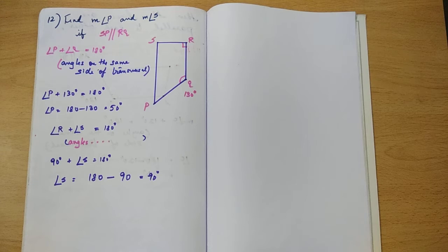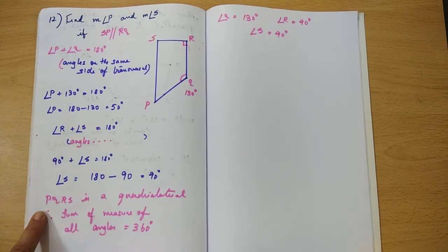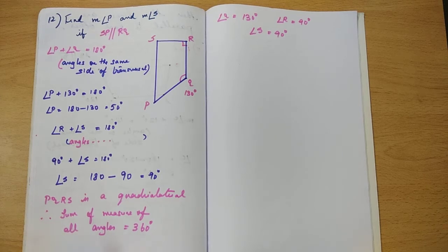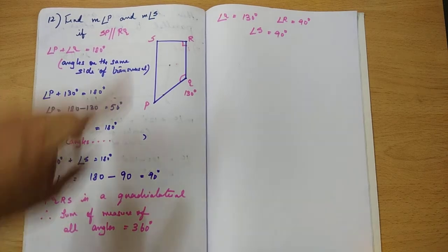We know that PQRS is a quadrilateral. So we know the angle sum property in a quadrilateral. What is it? The sum of the angles in a quadrilateral is equal to 360 degrees. So PQRS is a quadrilateral. Therefore, sum of measures of all angles equal to 360 degrees. Angle sum property.